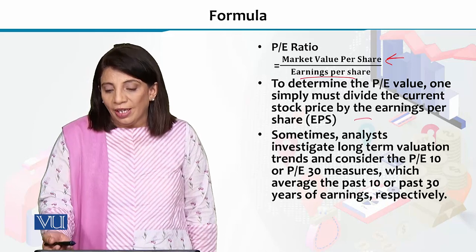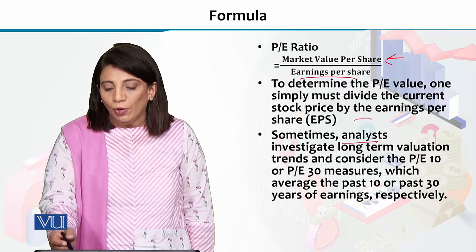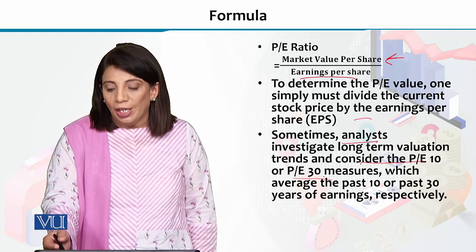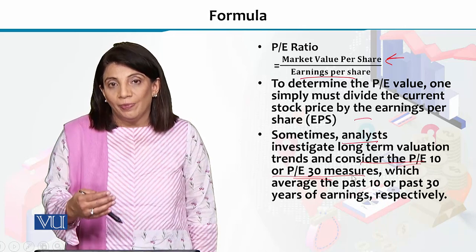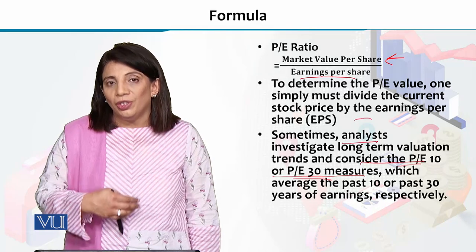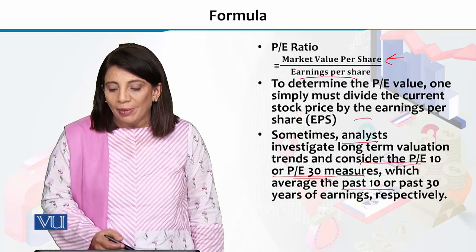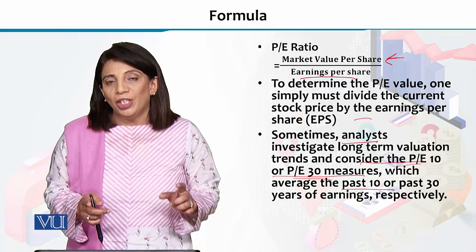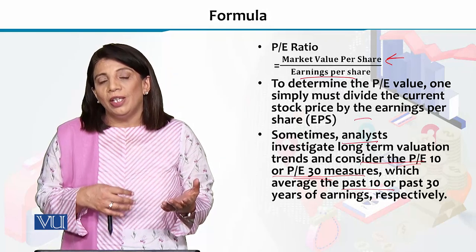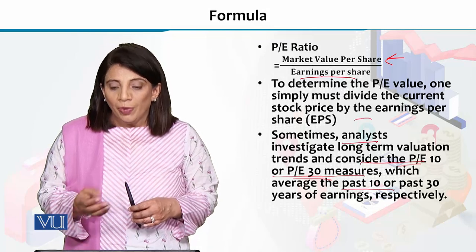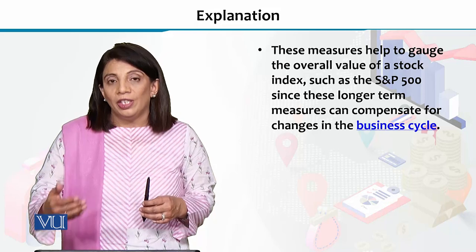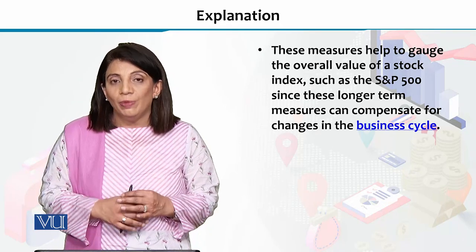More analysts who are assessing long-term valuation trends also use the PE ratio, and for that they have PE 10 and PE 30 measures. These are formulas used for long-term comparisons and analysis of valuations and trends of companies. In PE 10, you take the data on price-to-earnings over 10 years and assess the trends. PE 30 means that for a very old company, you take the past 30 years of data on market value per share and earnings per share, and compare the PE ratio to understand the overall upward or downward trend in the firm's PE ratio over time.